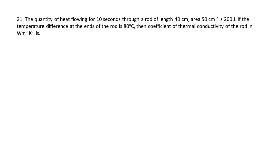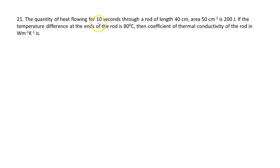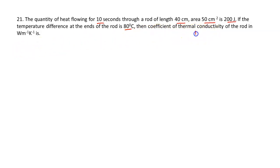Hello everyone, this is the third video in the series of numerical questions for JEE Mains and NEET. Let us see the first question here. The quantity of heat flowing for 10 seconds through a rod of length 40 centimetres and area 50 centimetre square is 200 joules. If the temperature difference at the ends of the rod is 80 degrees centigrade, then the coefficient of thermal conductivity of the rod is — we have to find the value of k.